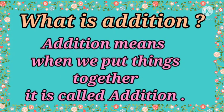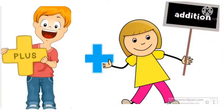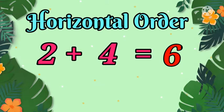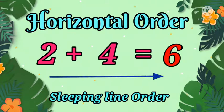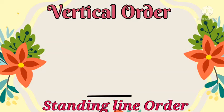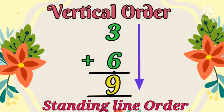Now first I will tell you what is addition. Addition means when we put things together, it is called addition. The sign of addition is plus. Children, we are going to learn addition in two different ways. One is writing the numbers in horizontal way, means slipping line order, and the other one is vertical way, means standing line order.